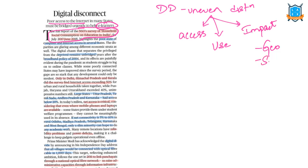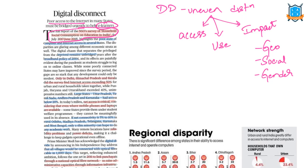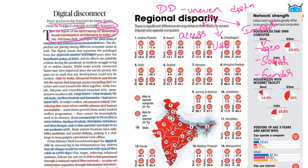This uneven distribution is across geographical boundaries — it may be urban versus rural areas, or north Indian states versus south Indian states. It may also be across social sectors, economic classes like rich and poor, or among genders. So digital divide is the uneven distribution with respect to access and usage of internet, across geographical borders, social sectors, or gender disparity.